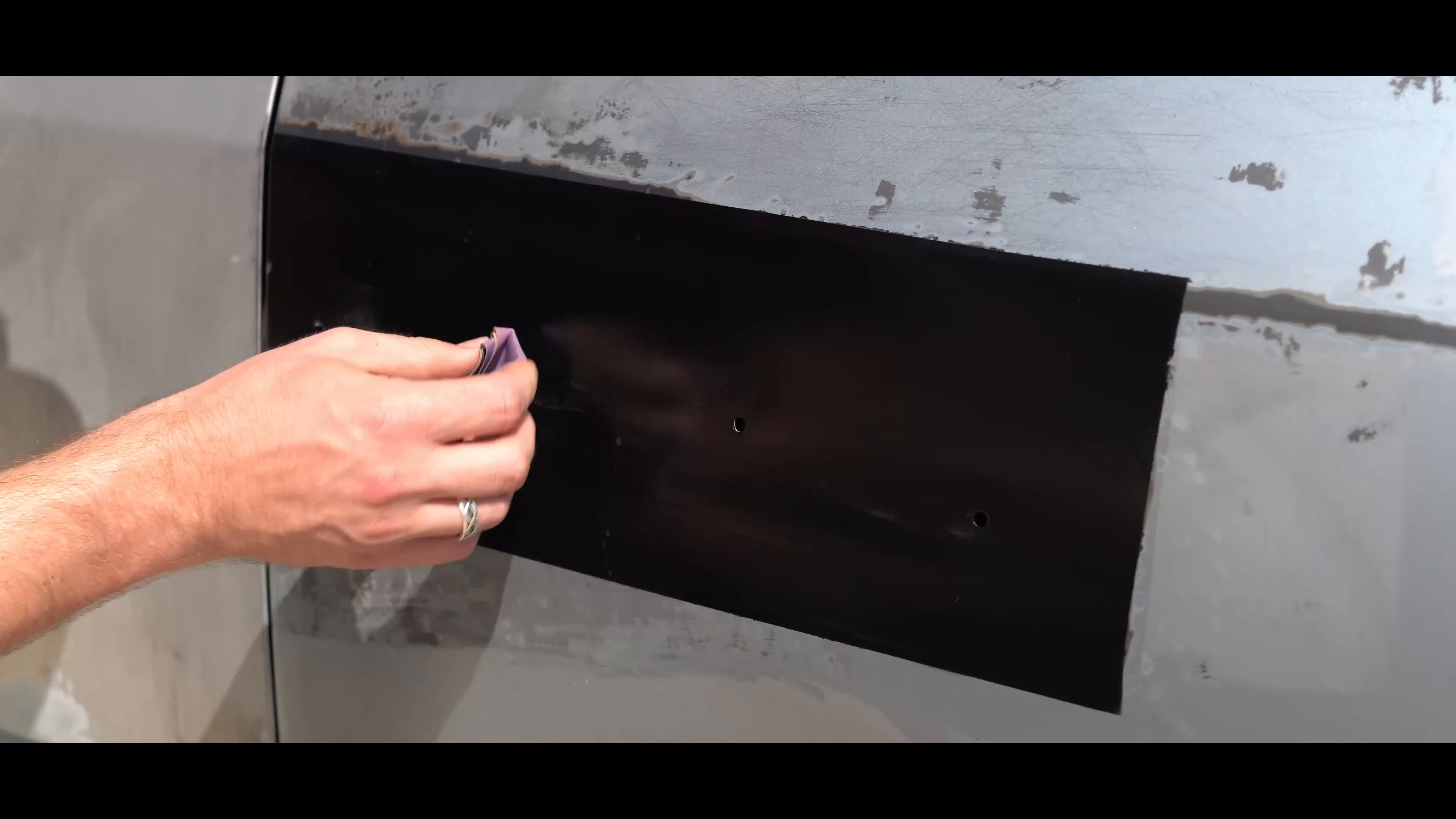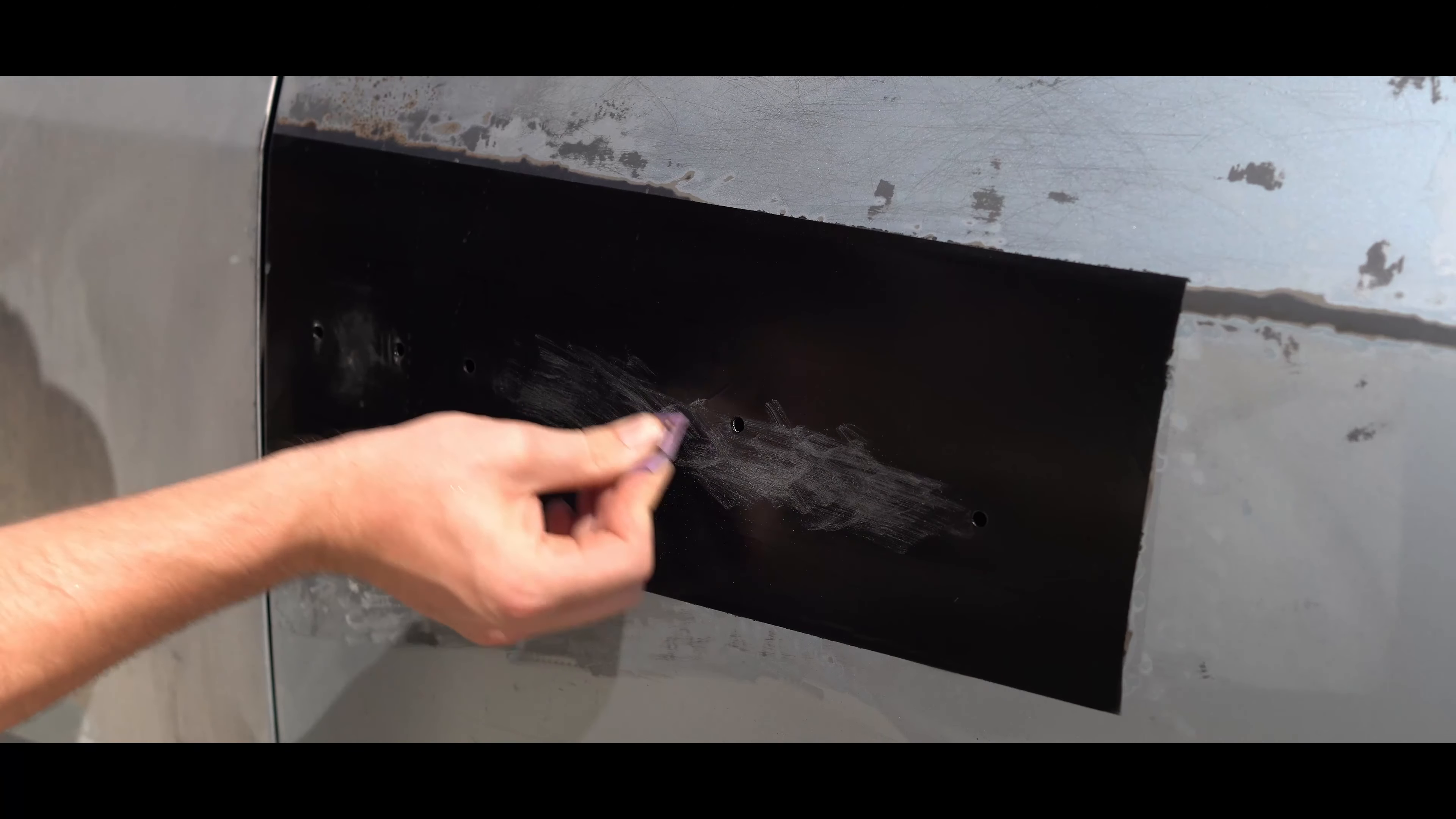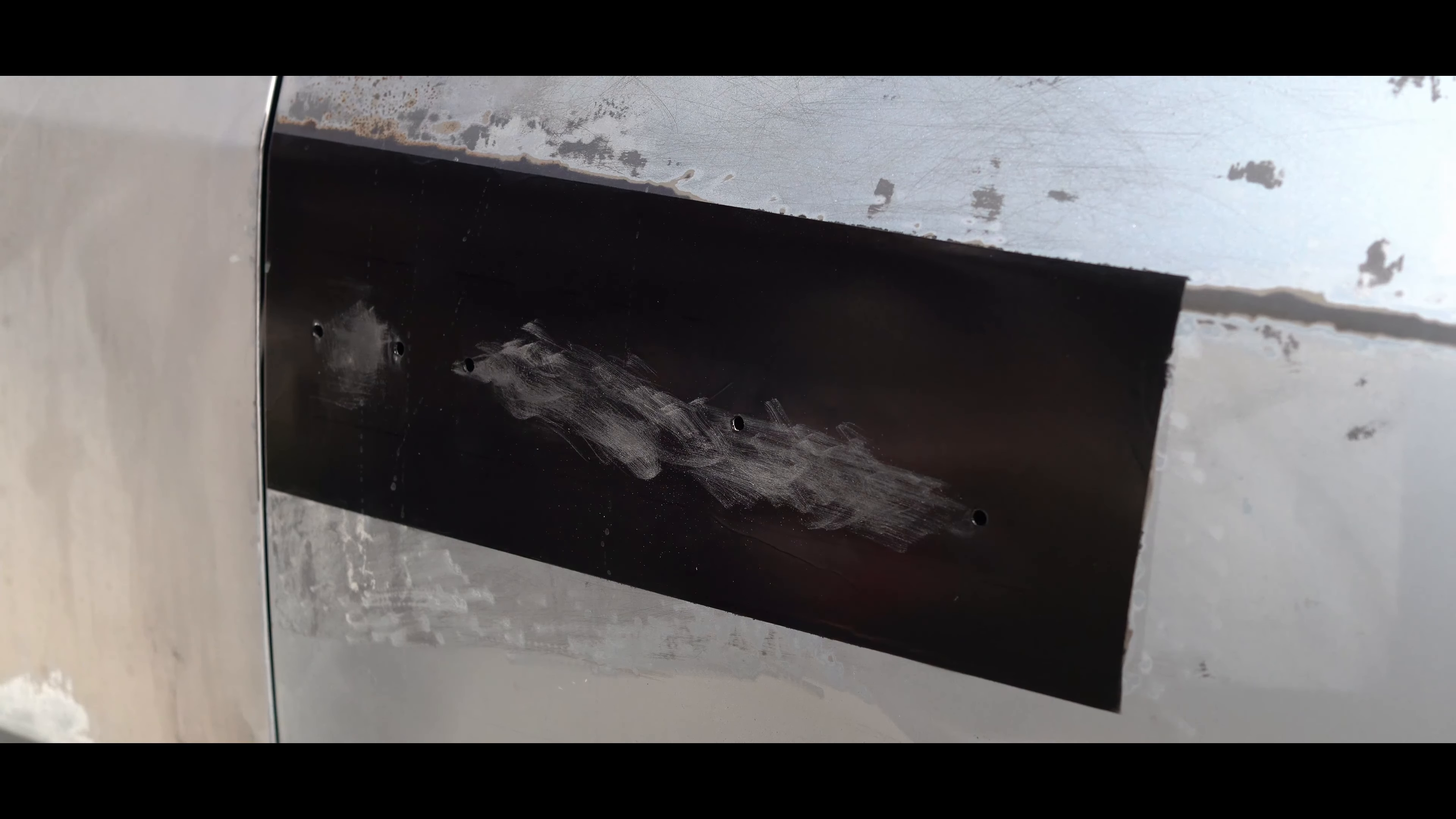First you want a light scuffing on the area directly underneath your badge or trim. You don't want to go down to bare metal or anything, just very light, nothing crazy, not too harsh. You'll be using your scotch brite or sandpaper. For me I was using 220 grit sandpaper for this application. The reason behind this is to help the glue have something to bite onto to have a stronger mechanical bond to the surface so it doesn't fall off as easily.